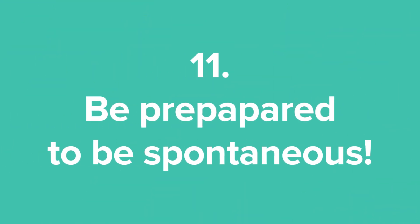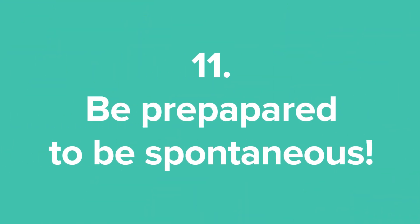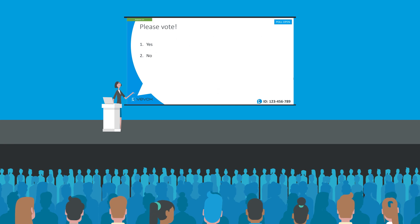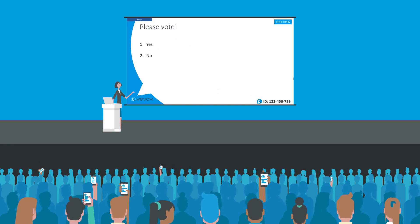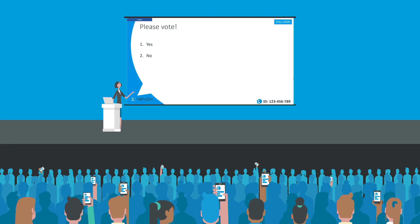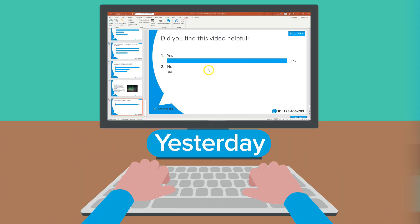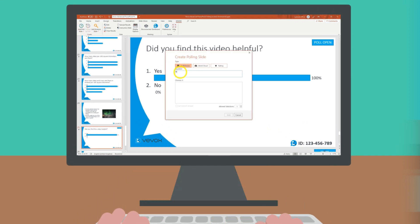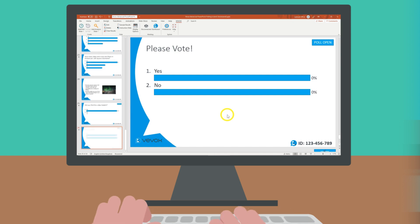Tip 11: Be prepared to be spontaneous. Unplanned polls are commonly called for once people see the PowerPoint polling in action. Being ready to offer them in a split second gets you to legend status. Whilst you could drop out of slideshow mode and quickly program a polling question, it's far better to have some stock ones ready at the end of your presentation, which you can simply jump to using the keyboard shortcut in Tip 6.